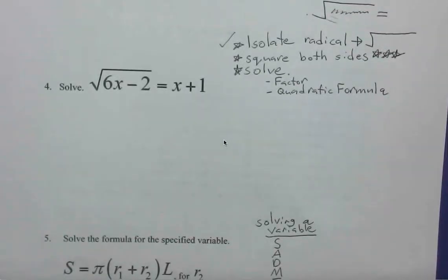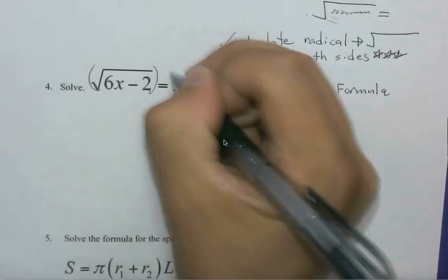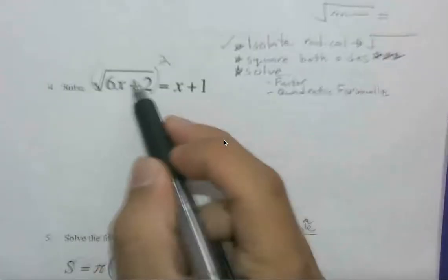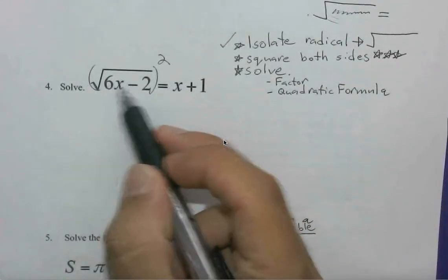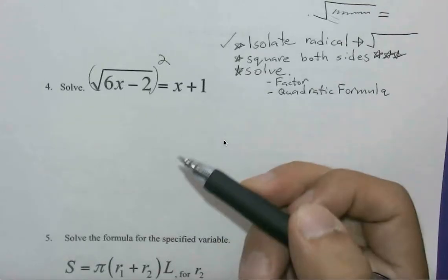From here, if we square both sides, to get rid of the radical, we can square both sides. So when we square a square root, that just leaves us with the material inside. So what do you think is going to be left here if we square the left side?